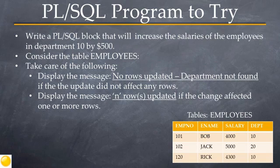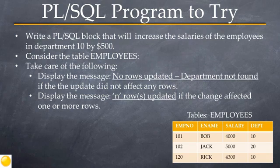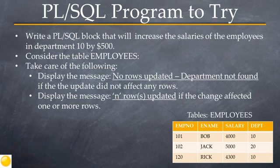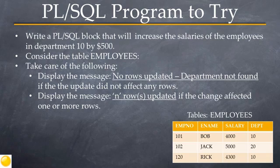On this slide you have a program to try, based on the data in the employees table, to see if you've understood the tutorial. You must write a PL/SQL block that will update and increase the salaries of employees in department 10 by 500. The program should indicate whether the update happened, with messages: if no rows were updated, display 'No rows updated - department not found'; if rows were updated, display 'N rows updated' where N is the number of rows affected. You can pause the video to try the program, as the solution is on the next slide.